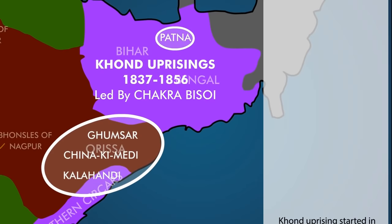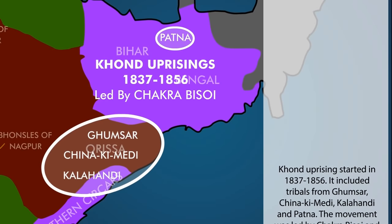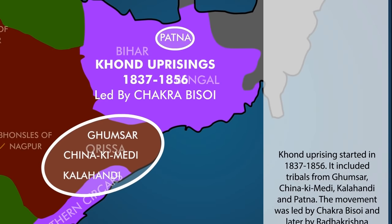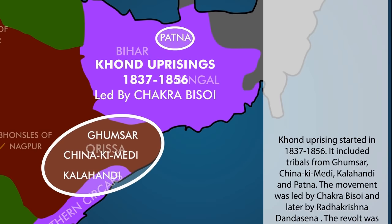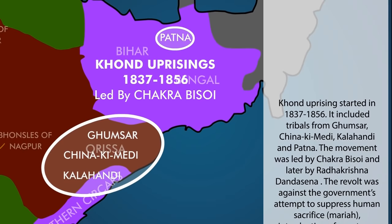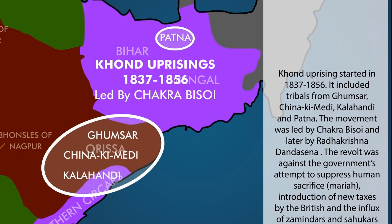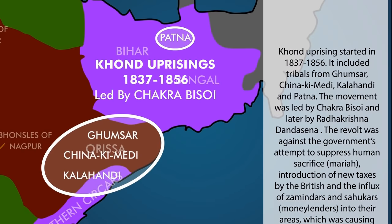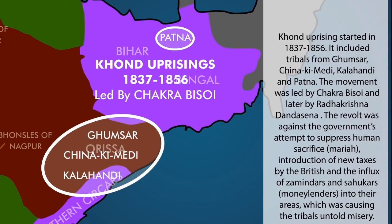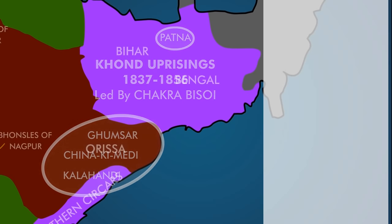The Khond uprising started in 1837 and lasted until 1856. It included tribals from Ghumsar, Chinaki Medhi, Kalahandi and Patna. The movement was led by Chakra Bisoy and later by Radhakrishna Dandasena. The revolt was against the government's attempt to suppress human sacrifice, the introduction of new taxes by the British, and the influx of Zamindars and Sahukars into their areas, which was causing the tribals untold misery.